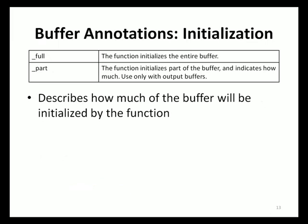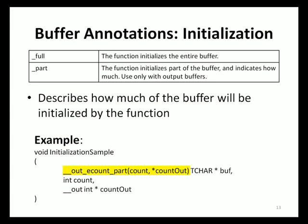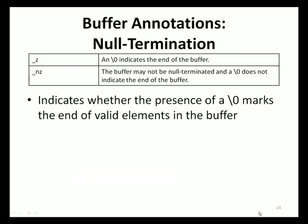The annotations found in the initialization category are used to describe how much of a buffer argument will be initialized by a function. The _full annotation indicates that the entire buffer will be initialized, whereas the _part annotation indicates that only part of the buffer will be initialized. Note that the _part annotation can only be used with output buffers. In sample code illustrating _part, a function named initialization_sample is declared with three arguments. The buff argument is annotated with _out _eCount_part(count, count_out), indicating that buff is a buffer with count elements, will be partially initialized, and the length of initialization is specified in count_out.